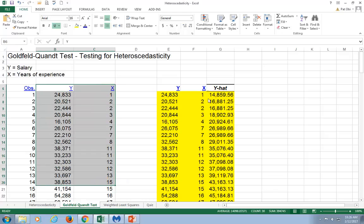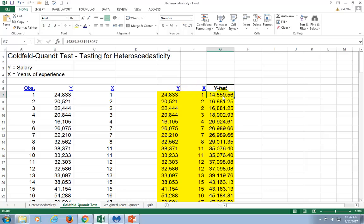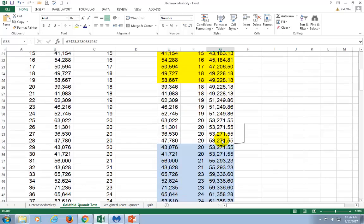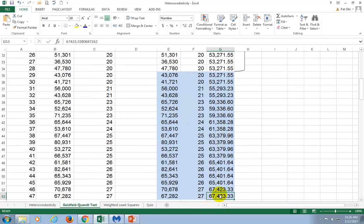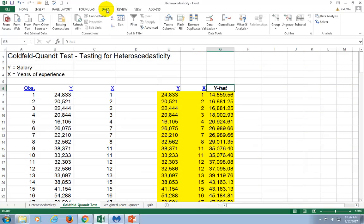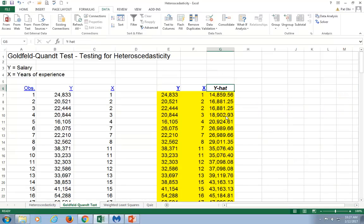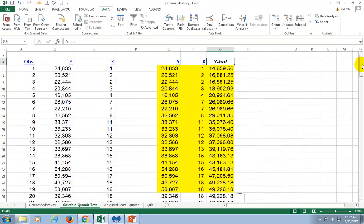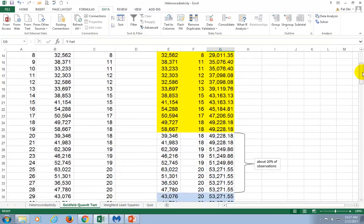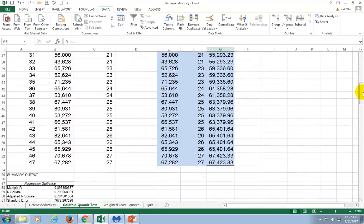So, this is my original data set. And as you see here, I copied over Y hat values and then I sorted from the smallest Y hat value to the largest Y hat value. And to sort, of course, you're going to go to data and you sort and then it's going to prompt you sort by what. You choose Y hat and then smallest to largest and then click OK and it's going to give you this.